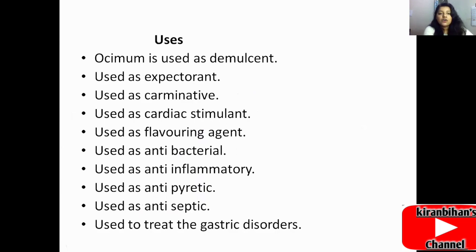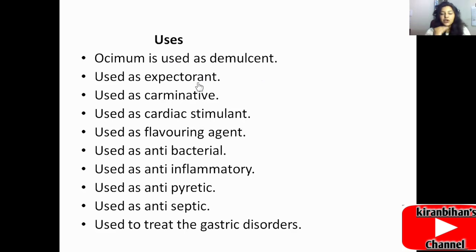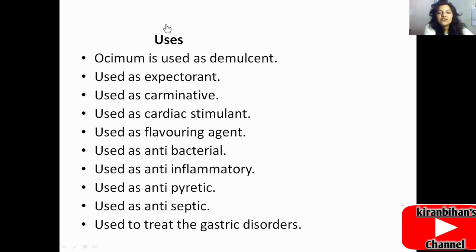Ocimum basilicum is used as a demulcent, which reduces pain of the stomach. It is an expectorant that stimulates expectoration of sputum from the lungs. It is used as a carminative, a cardiac stimulant, a flavoring agent, and as an antibacterial, anti-inflammatory, antipyretic, and antiseptic. It is also used to treat gastric disorders.